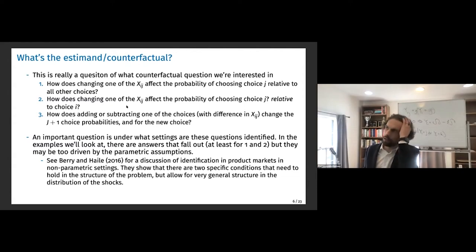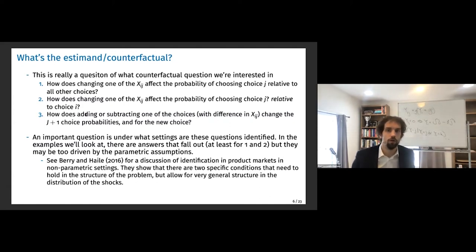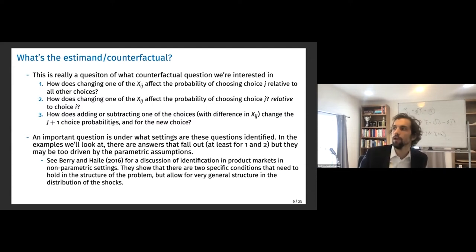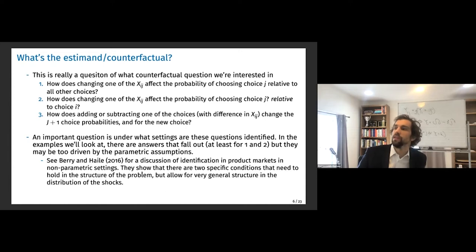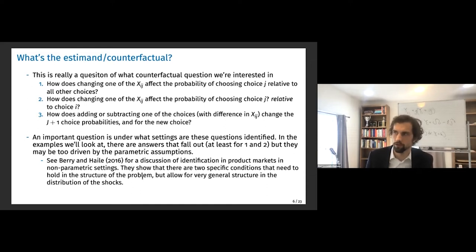A last counterfactual of interest is how adding or subtracting one of the choices changes choice probabilities — relevant if you want to know the effect of a new product on relative market shares. Under what settings are these demands identified? For types one and two they definitely are, but they can be heavily driven by parametric assumptions. For more on identification, see the Barry and Hale Annual Review of Economics article — they show two specific conditions are needed but you can put very general structure on the distribution of shocks.